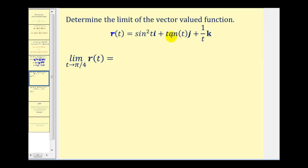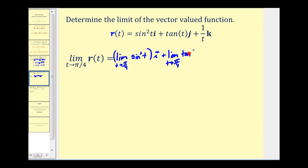This next example has an x, y, and z component, so we need to determine three limits. We'll have the limit as t approaches π/4 of sine squared t times unit vector i, plus the limit as t approaches π/4 of tangent t times unit vector j, and lastly the limit as t approaches π/4 of one over t times unit vector k.